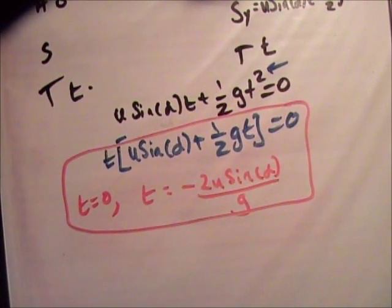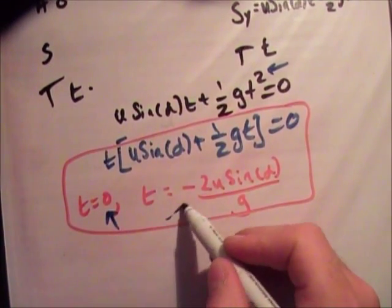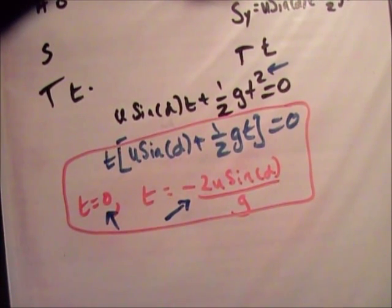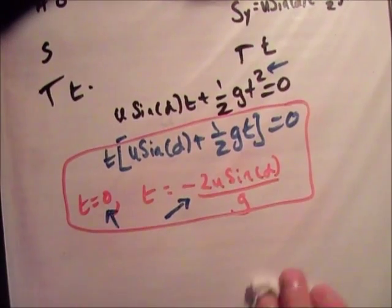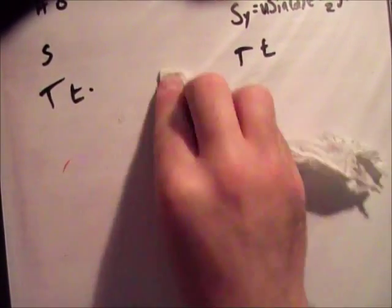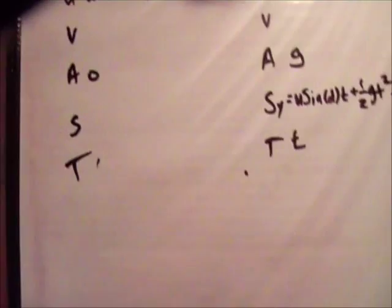So we know that at that time, think about it now. At t is equal to zero, the particle hasn't been projected, so it's still on the ground. And this is the time at which the particle is also on the ground the second time. So it's when it hit the ground after, at its maximum range. So we now know the time at which it's at its maximum range.